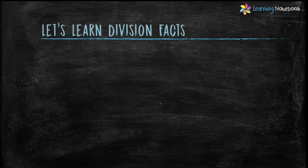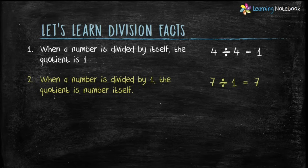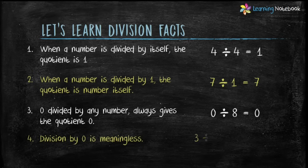Moving on, let's learn division facts. Fact 1: when a number is divided by itself, the quotient is 1. For example, 4 ÷ 4 = 1. Fact 2: when a number is divided by 1, the quotient is the number itself. For example, 7 ÷ 1 = 7. Fact 3: 0 divided by any number always gives the quotient as 0. For example, 0 ÷ 8 = 0. Fact 4: division by 0 is meaningless. For example, 3 ÷ 0 is meaningless because nothing can be divided by 0.